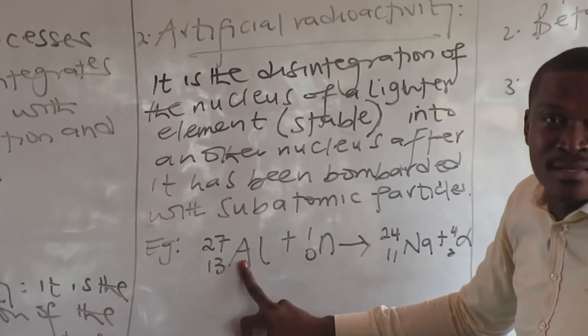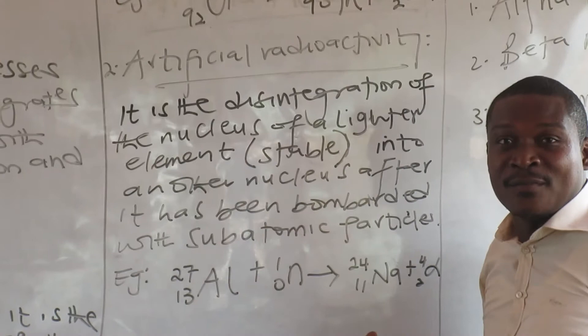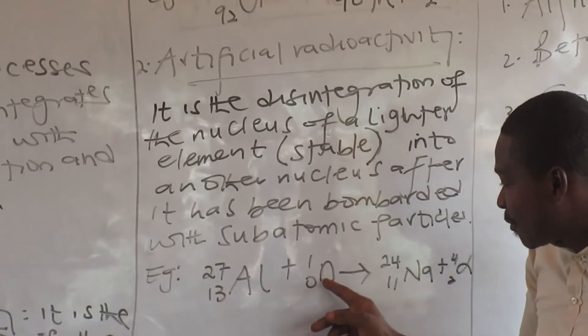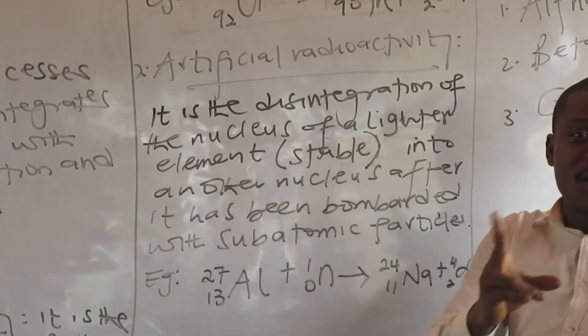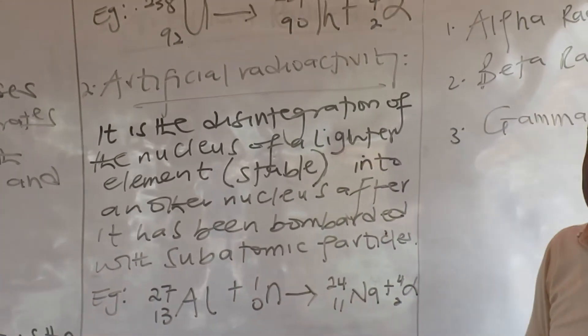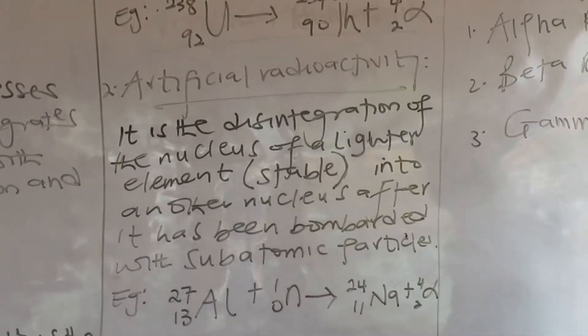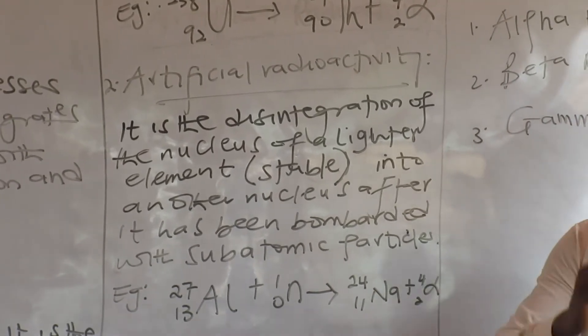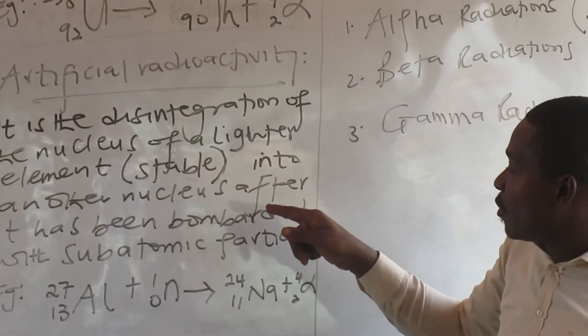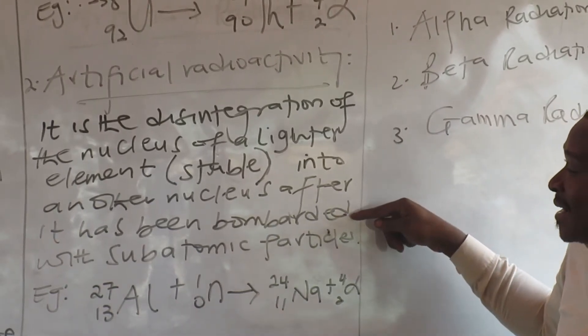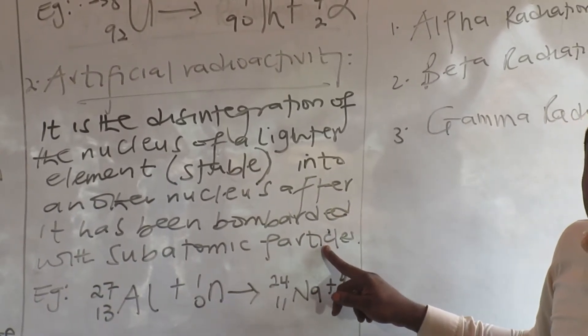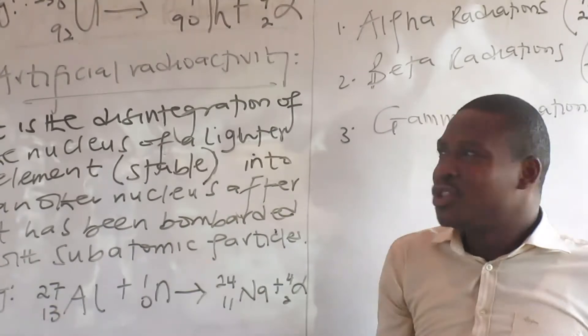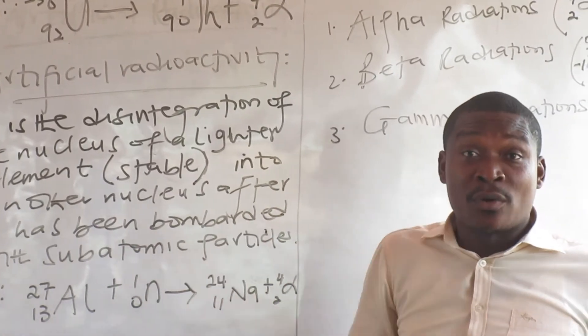Aluminum is a stable element. It cannot disintegrate unless we force it. That is why we say we bombard. We do force breaking. So you expect to see something attached to aluminum before the arrow. So this is how to differentiate between natural equations and artificial. Now let's look at artificial radioactivity. Uranium is unstable. It can disintegrate on its own.